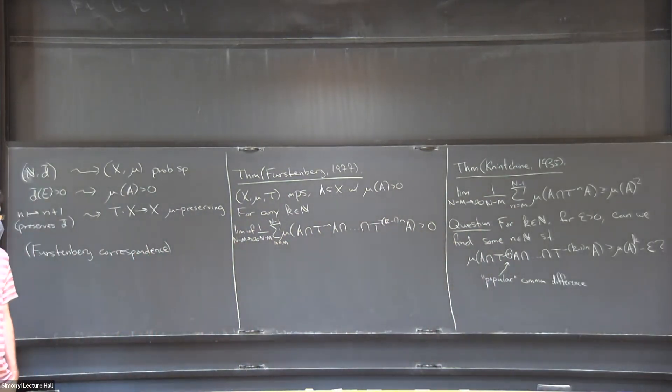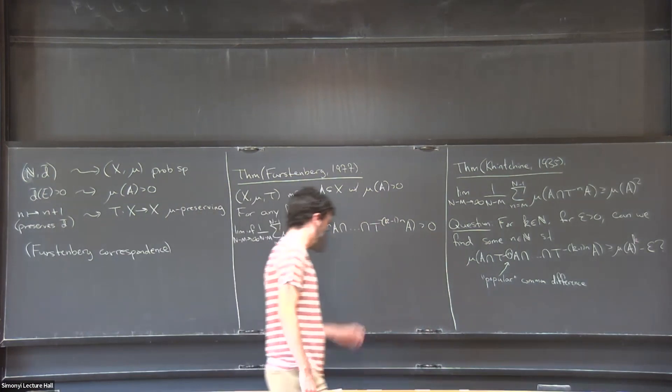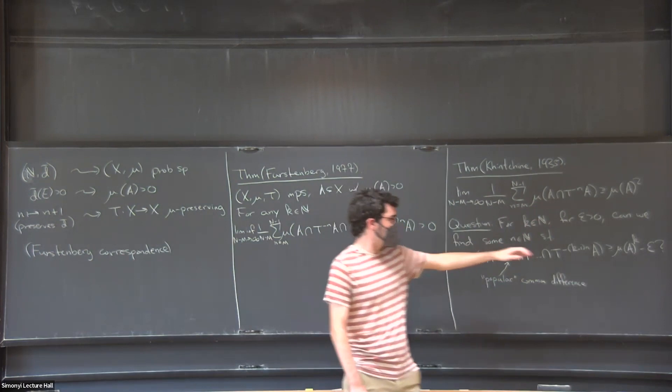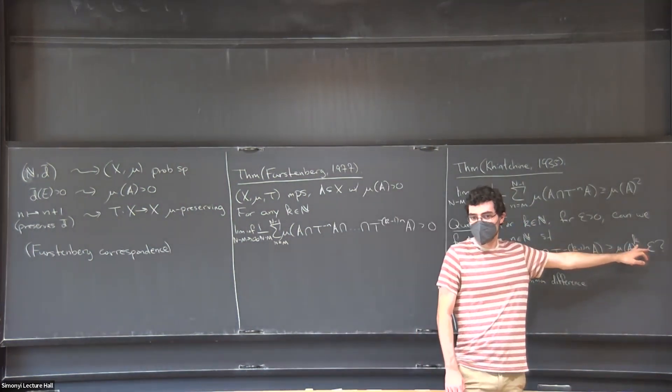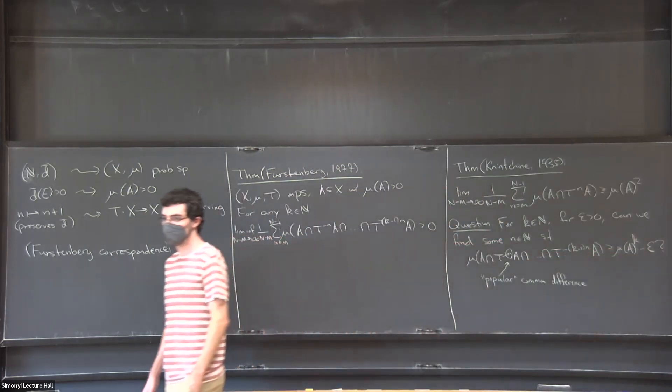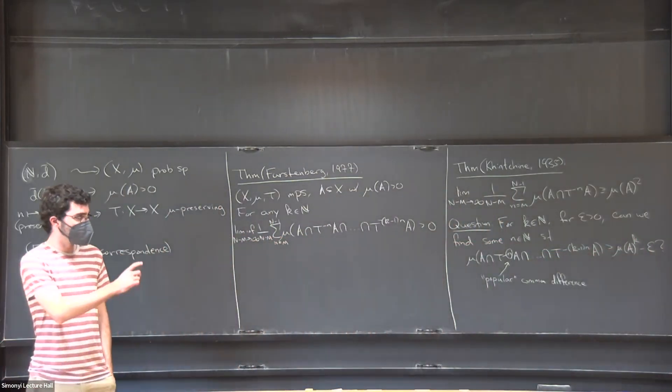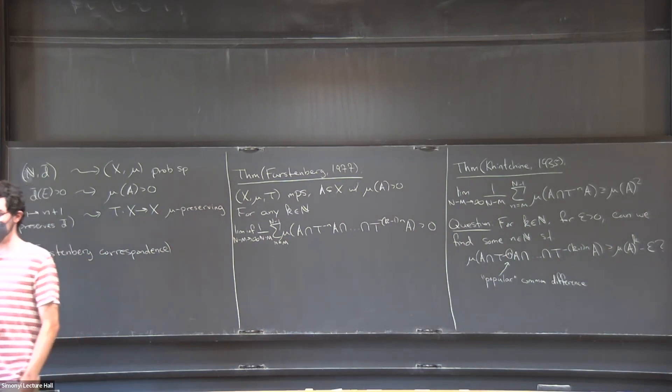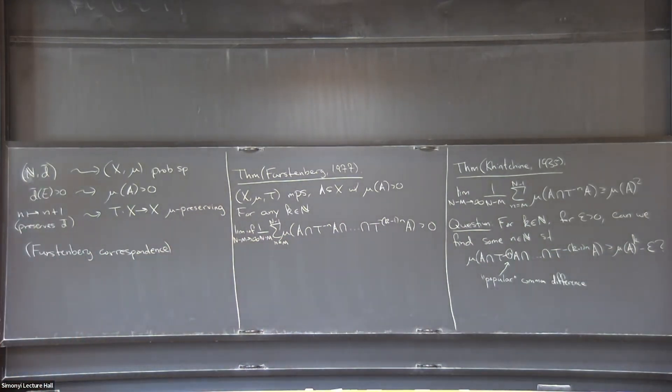Thanks a lot for the very enjoyable talk. We have a few minutes for questions. Is there some other lower bound besides mu to the K that is true? Sometimes. No. So for K equal to 5, there's no power bound. So if you want any power here that won't happen. I don't know what the correct lower bound is, but it's very small. But there are some other short configurations where you can get some power bound that's worse than what you get from independence.